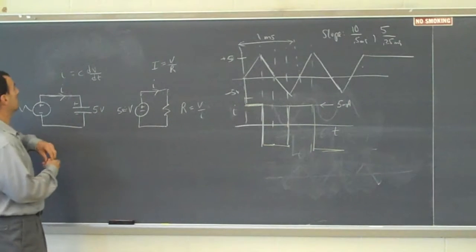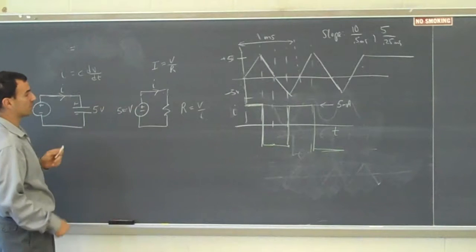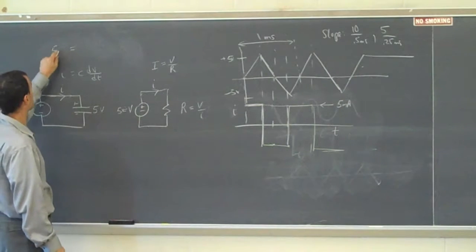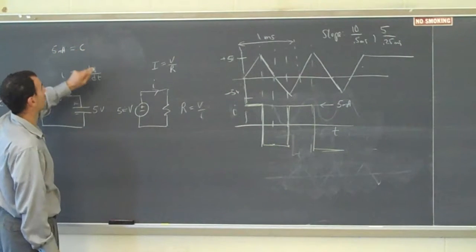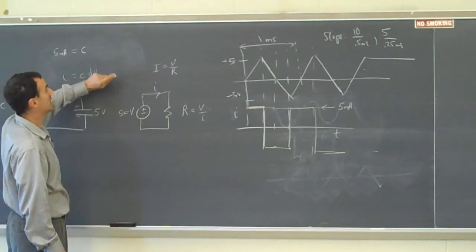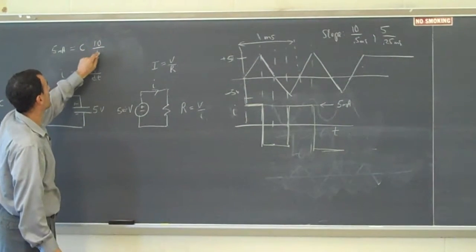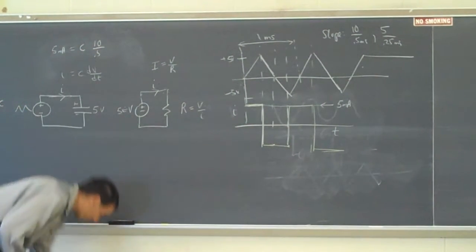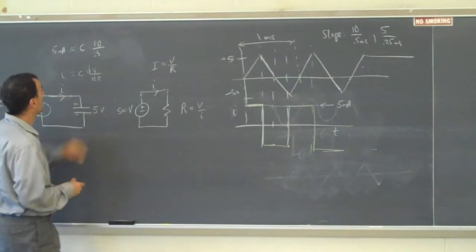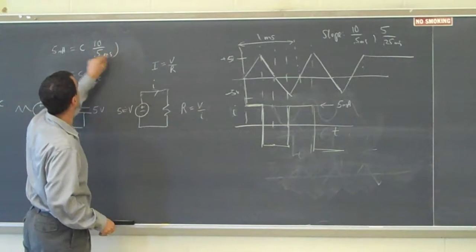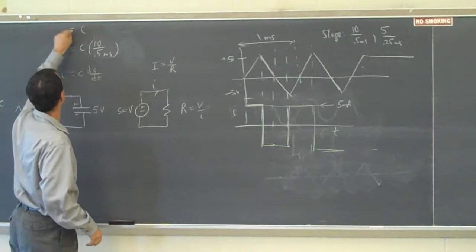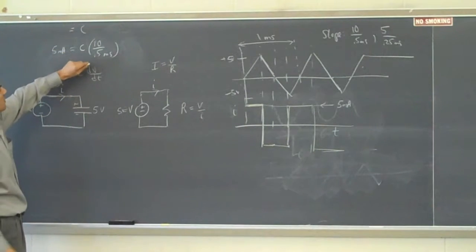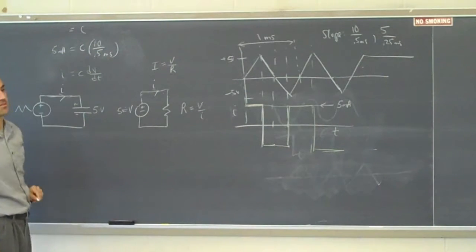So to get the capacitance, we'd solve this relationship. The current is 5 milliamps equals c times dv dt is 10 over 0.5 milliseconds.